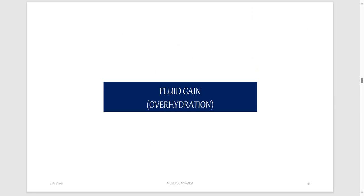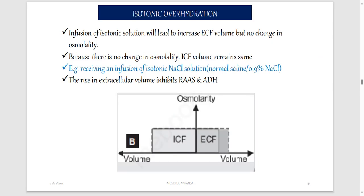So dehydration is the loss of fluid. You also have overhydration, which is the gain of fluid. Isotonic overhydration means you are gaining fluid that has the same concentration as inside the cells. The ECF volume increases, but because the gained fluid has the same concentration as inside the cell, it will not affect water movement. There is no change in ICF volume — ICF remains the same.